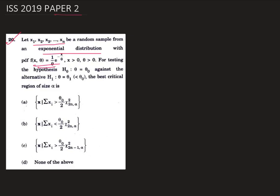For testing the hypothesis H₀ where theta equals theta naught against the alternative H₁ where theta equals theta 1, and theta 1 is less than theta naught, the best critical region of size alpha will be which of the given options. We need to find the correct one.